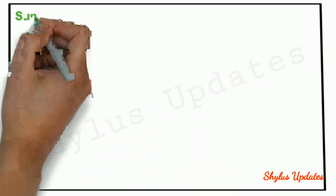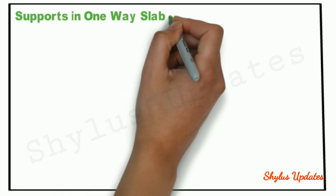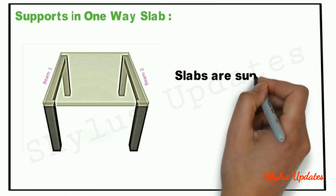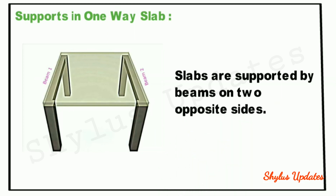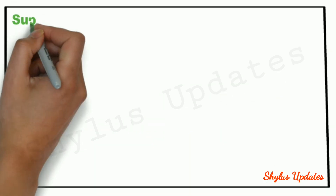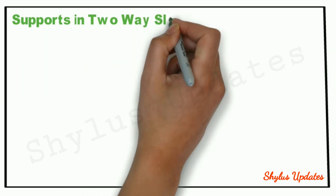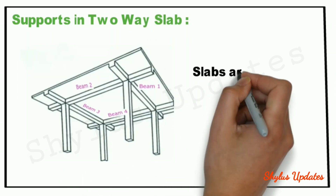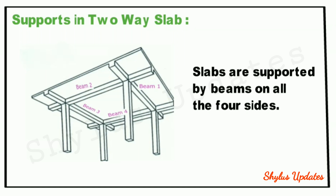Supports in 1-way slab: In a 1-way slab, slabs are supported by beams on 2 opposite sides. Supports in 2-way slab: In a 2-way slab, slabs are supported by beams on all 4 sides.